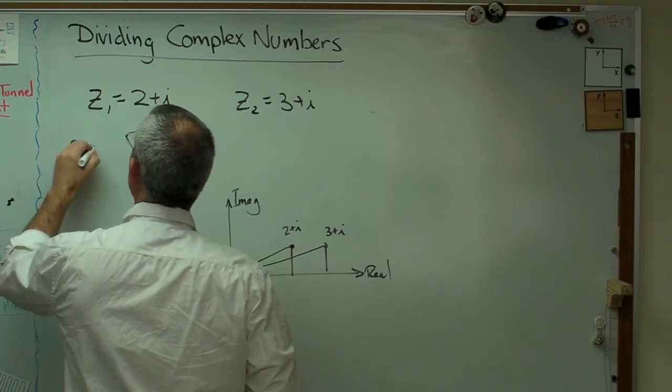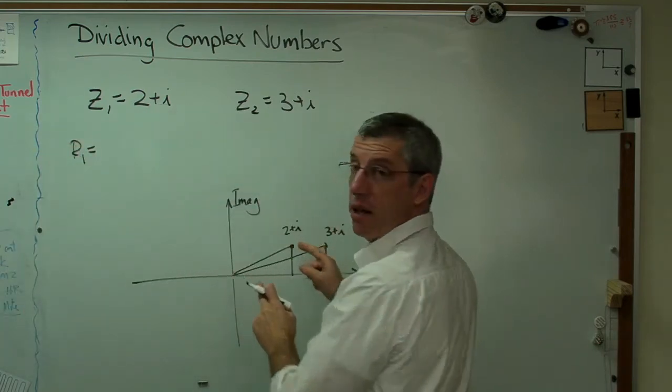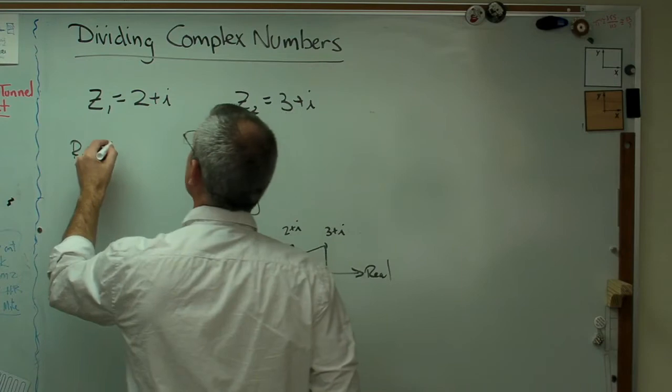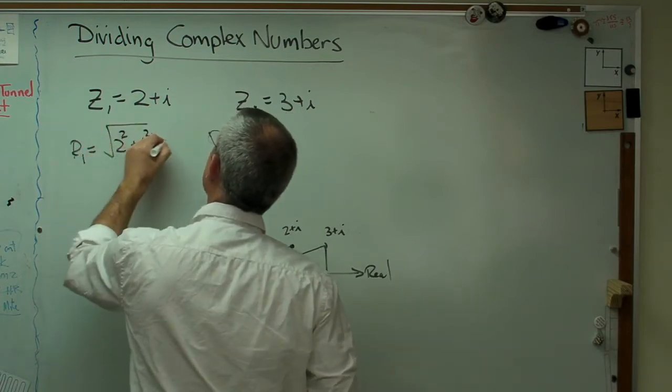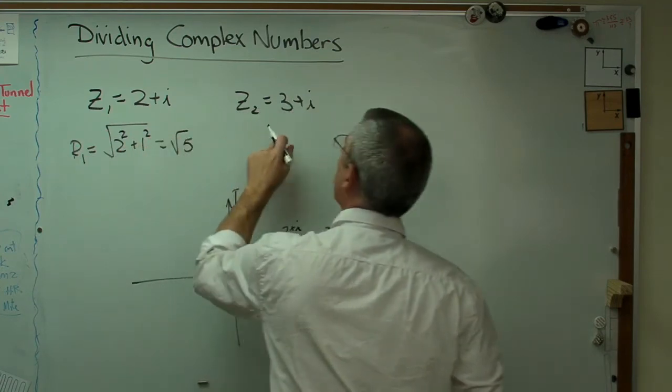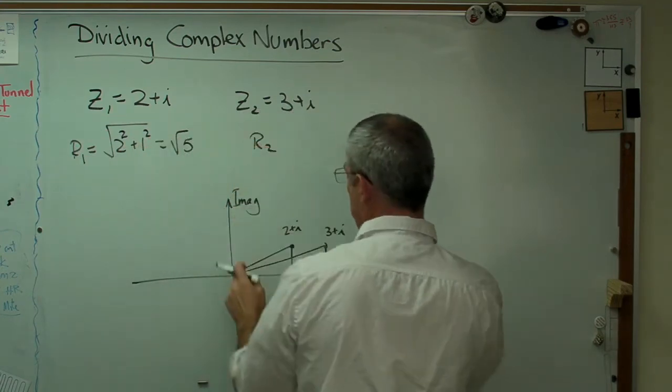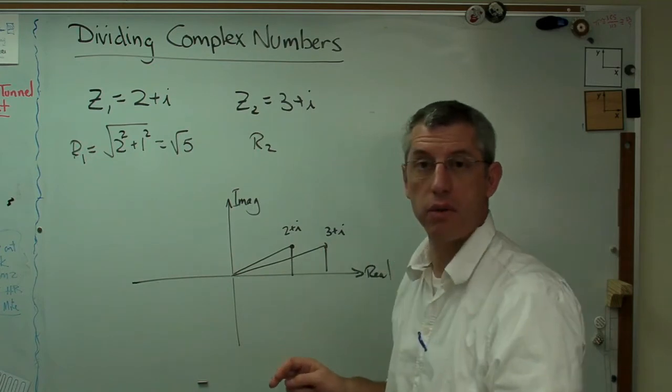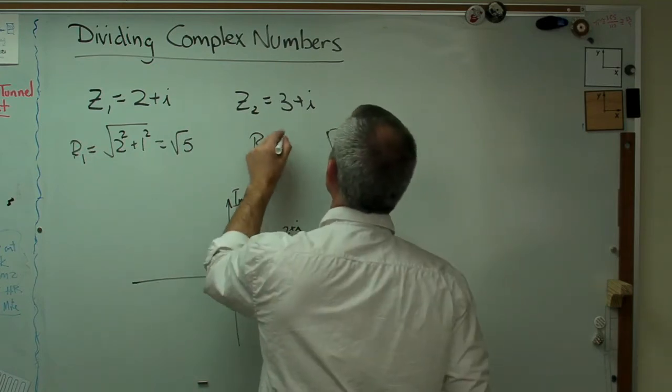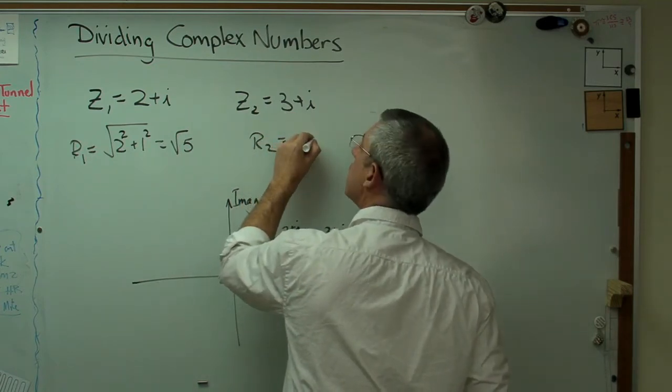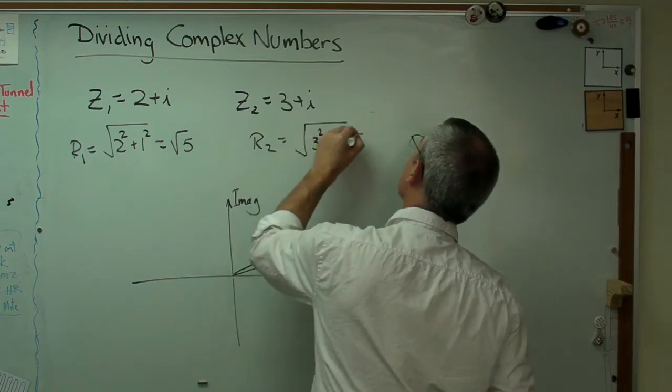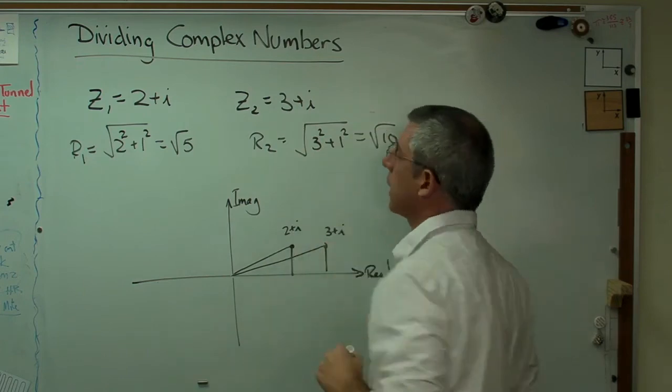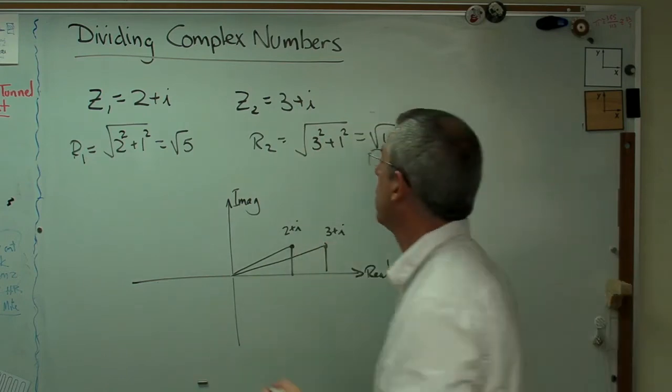Well, r1, which is going to be that first radius right there, is just using the Pythagorean theorem: 2 squared plus 1 squared, square root of that, is square root of 5. And on this one, r2, which is going to be that radius right there, would be 3 squared is 9 plus 1 squared. That's going to come out to the square root of 10. And I need angles for both of these.